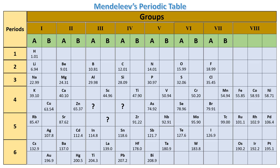He left some gaps in his periodic table for undiscovered elements. But at that time, Mendeleev was able to predict the properties of these undiscovered elements. Many years later, when these elements were discovered, they were found to have almost the same properties as determined by Mendeleev.